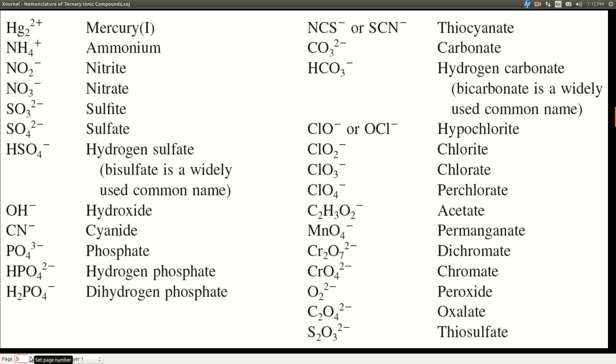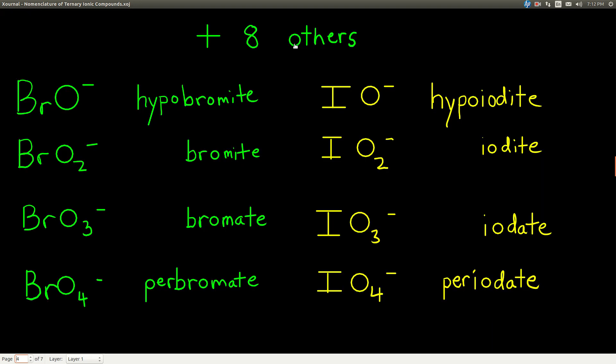There are some more that I'm going to ask you to memorize too. These eight others: hypobromite, bromite, bromate, perbromate, hypoiodite, iodite, iodate, and periodate. There's a pattern here that hopefully will help you remember them.